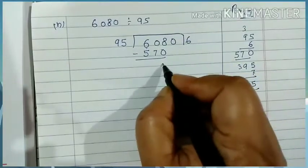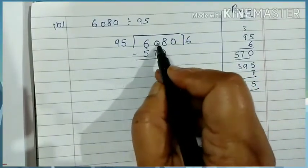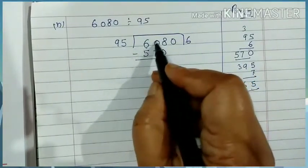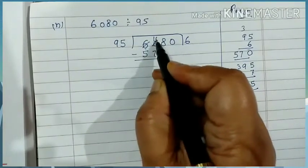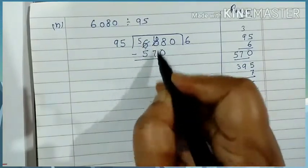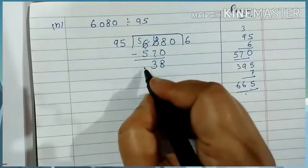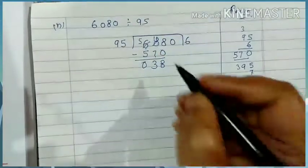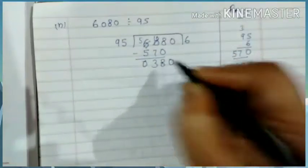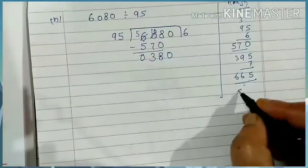Now eight minus zero is eight. Now this zero, zero mein se seven nahi jai ga, it will take carry. To it will be ten, and this will be five. So ten minus seven is three, and five minus five is zero. Now let's carry eight.